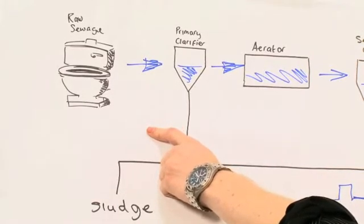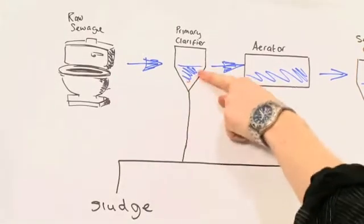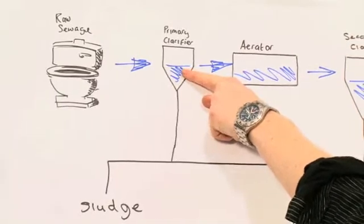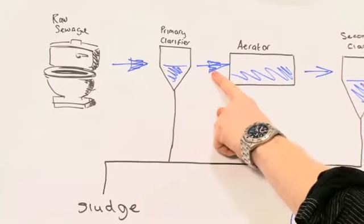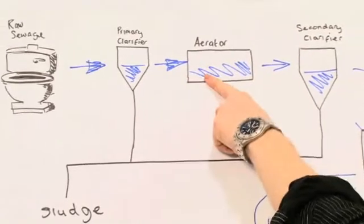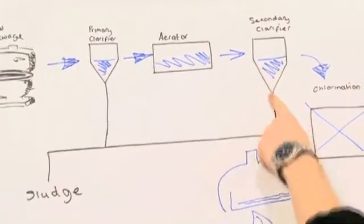When sewage enters the wastewater treatment works it goes through the primary clarification stage. This removes the majority of the sewage sludge. The wastewater and the remainder of the sewage sludge passes through an aerator and into the secondary clarification stage. Any remaining sewage sludge is removed.